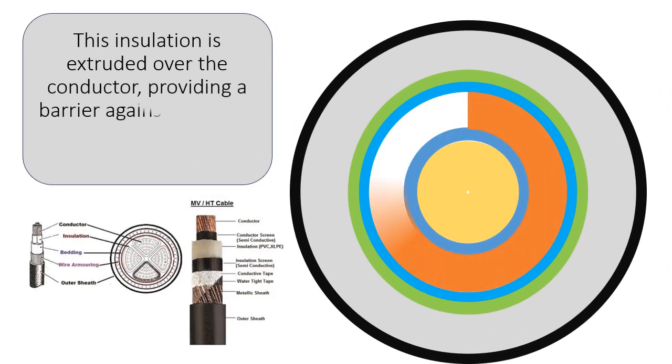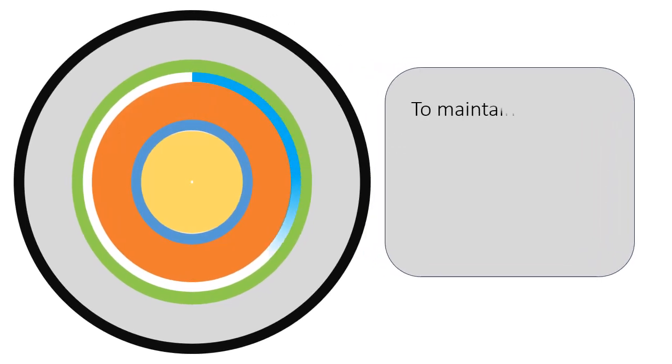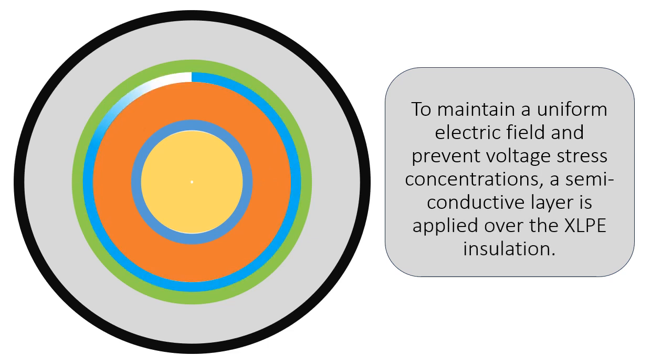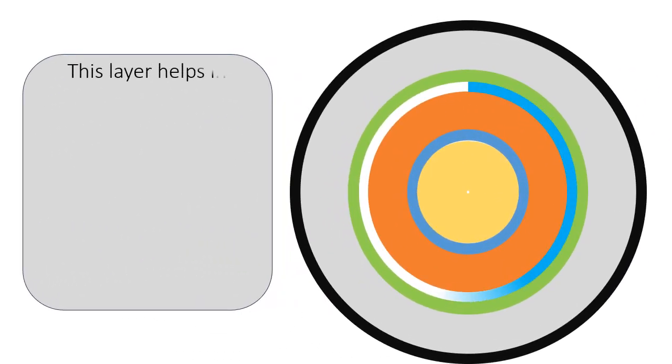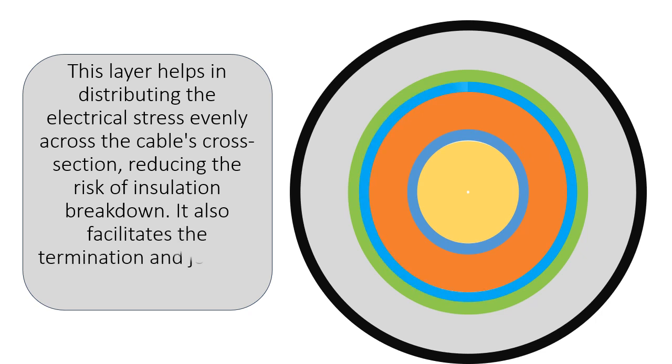Semi-conductive layer: To maintain a uniform electric field and prevent voltage stress concentrations, a semi-conductive layer is applied over the XLPE insulation. This layer helps in distributing the electrical stress evenly across the cable's cross-section, reducing the risk of insulation breakdown. It also facilitates the termination and jointing of XLPE cables.